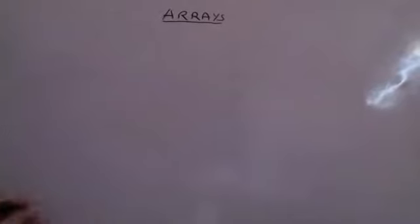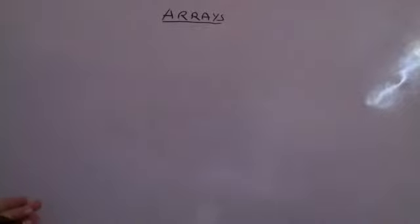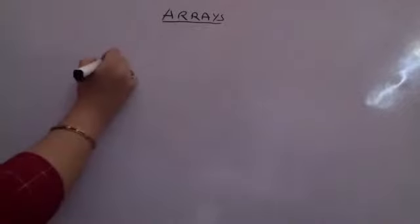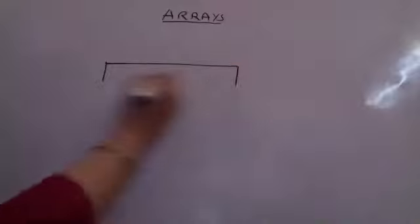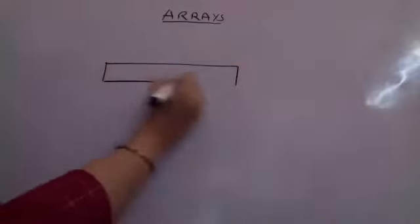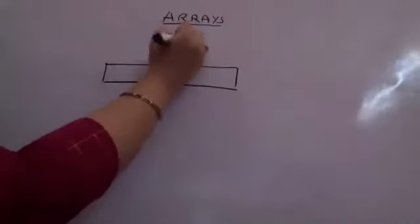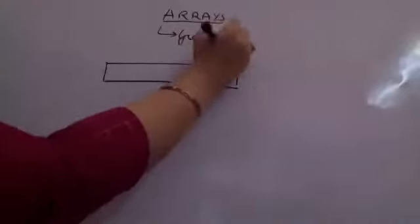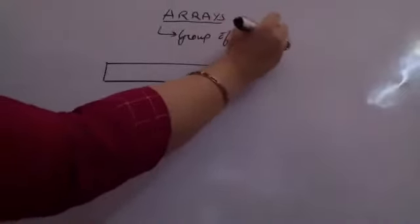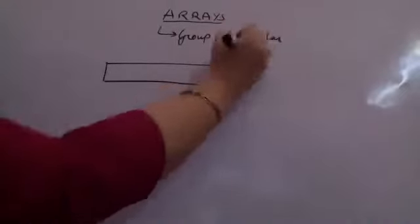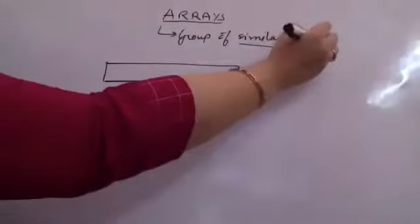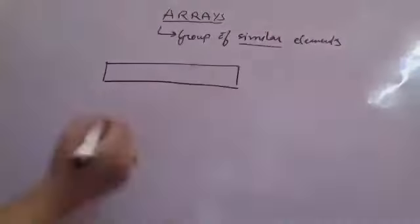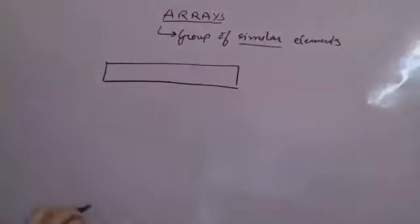The first data structure we are moving on to is arrays. What are arrays? They are a group of elements which are of similar type — essentially a group of similar kind of elements. 'Similar' means the same data type. So the data type could be anything.